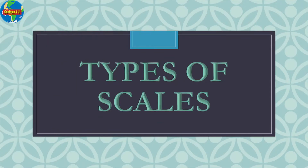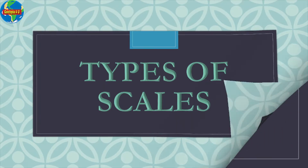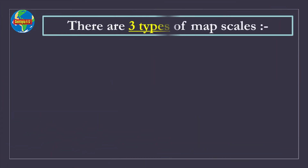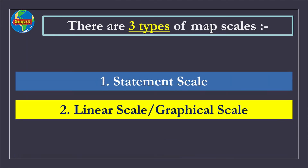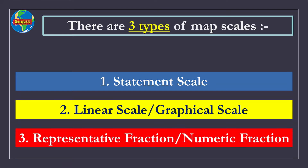Now we will have a look at the various types of scales. There are three types of map scales: 1. Statement scale. 2. Linear scale, also called graphical scale. 3. Representative fraction, also known as numeric fraction.